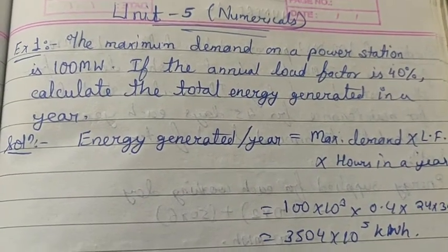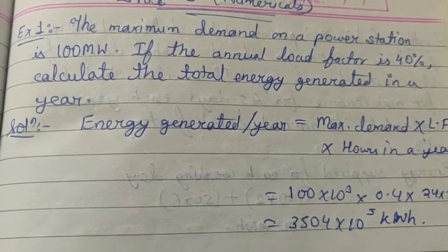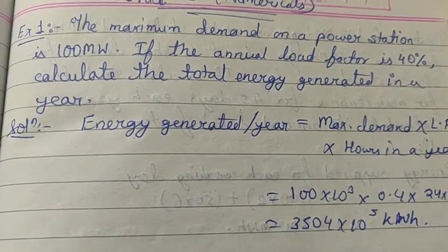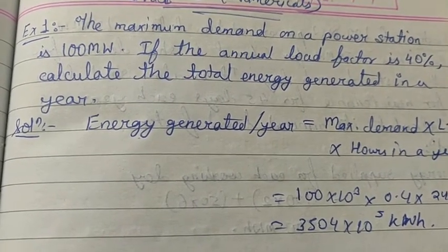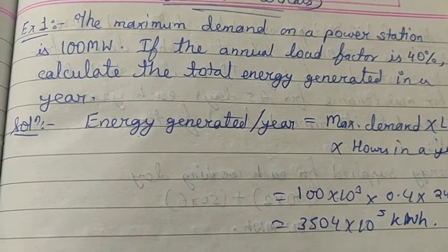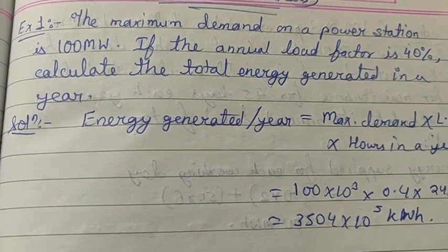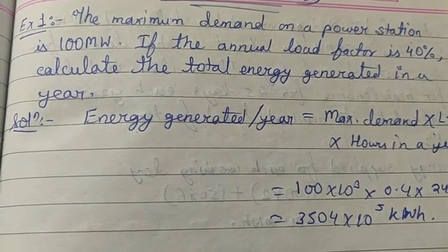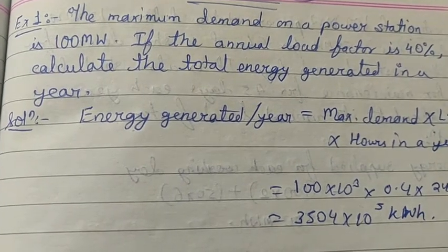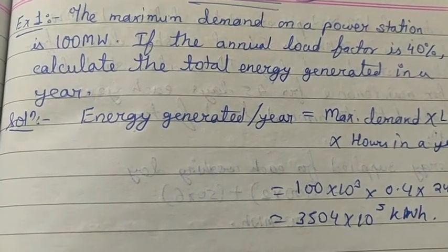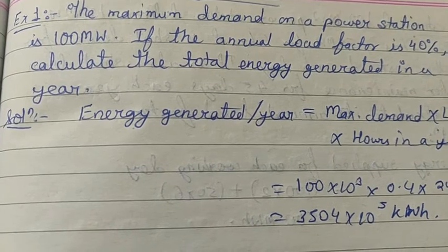Let's take one question. The maximum demand on a power station is 100 megawatt. If the annual load factor is 40%. So, the maximum demand of a power station is 100 megawatt, and the annual load factor is 40%. So we have to calculate the total energy generated in the year.